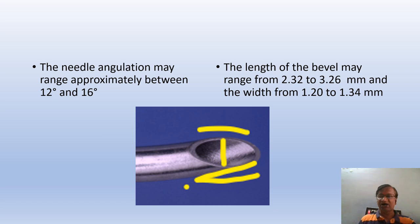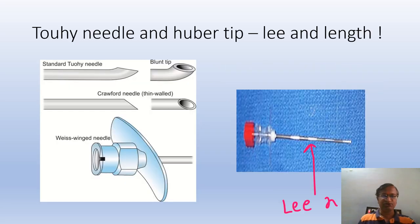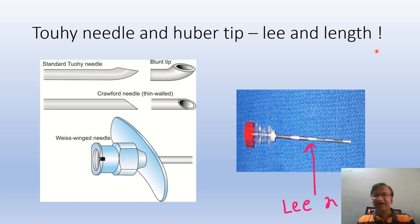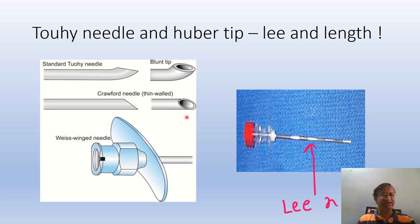This is how a normal Tuohy needle looks. Now a Tuohy needle Huber type, Lee needle, and length. The standard Tuohy needle has a blunt tip; this is the Crawford needle, and the Weiss winged needle.